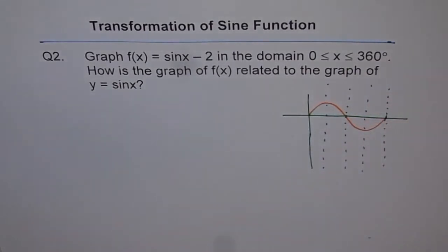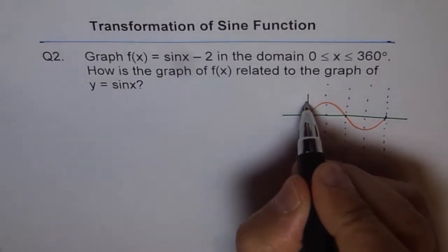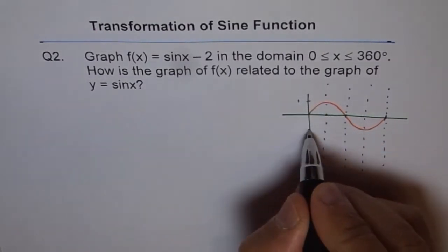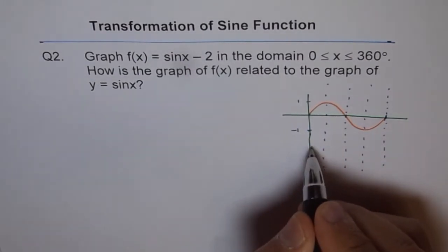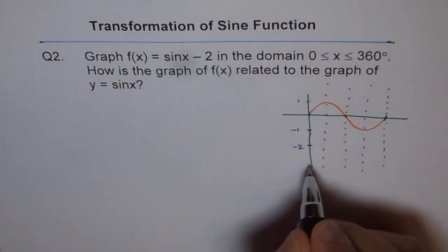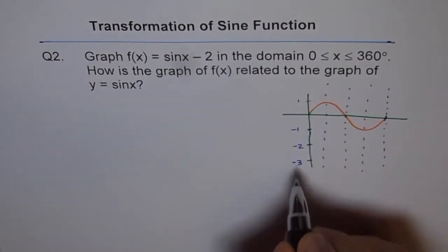Now, what do we notice here is, well, this is 1 for me. This is -1. So that will be -2. And then we have -3 like this.